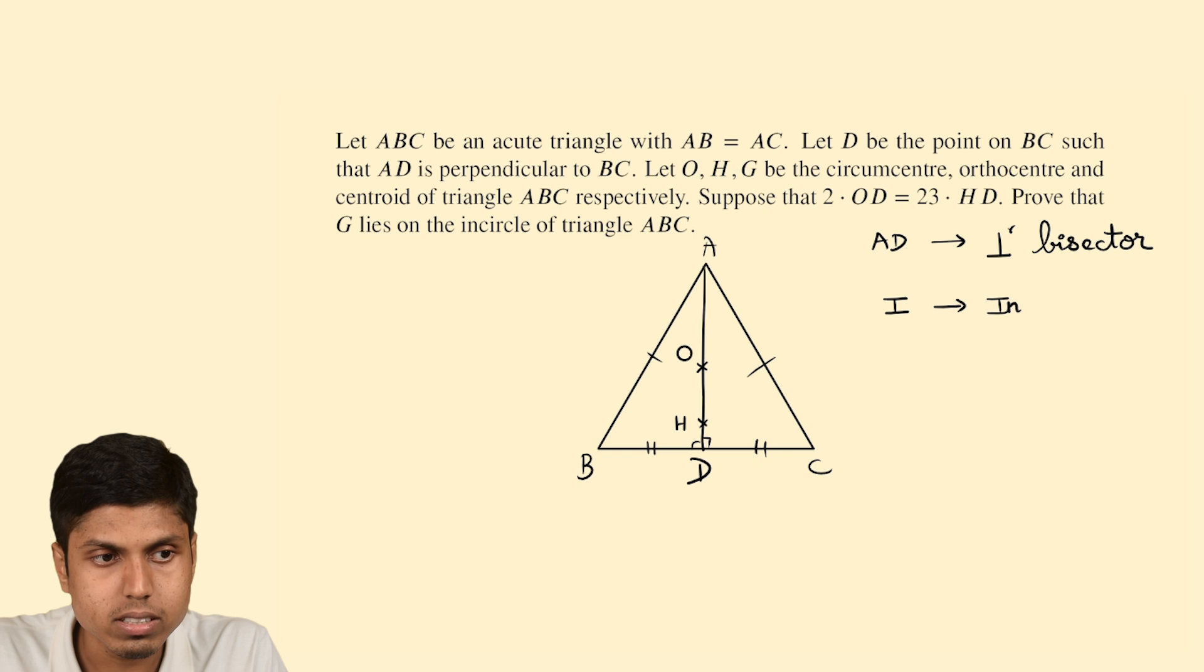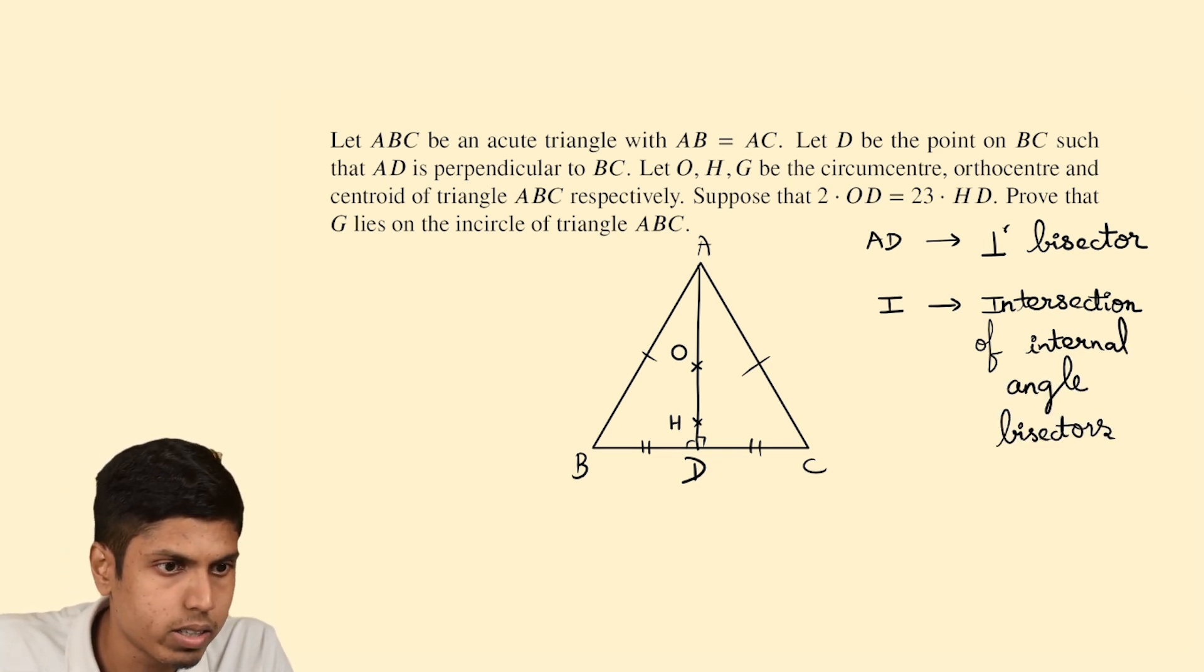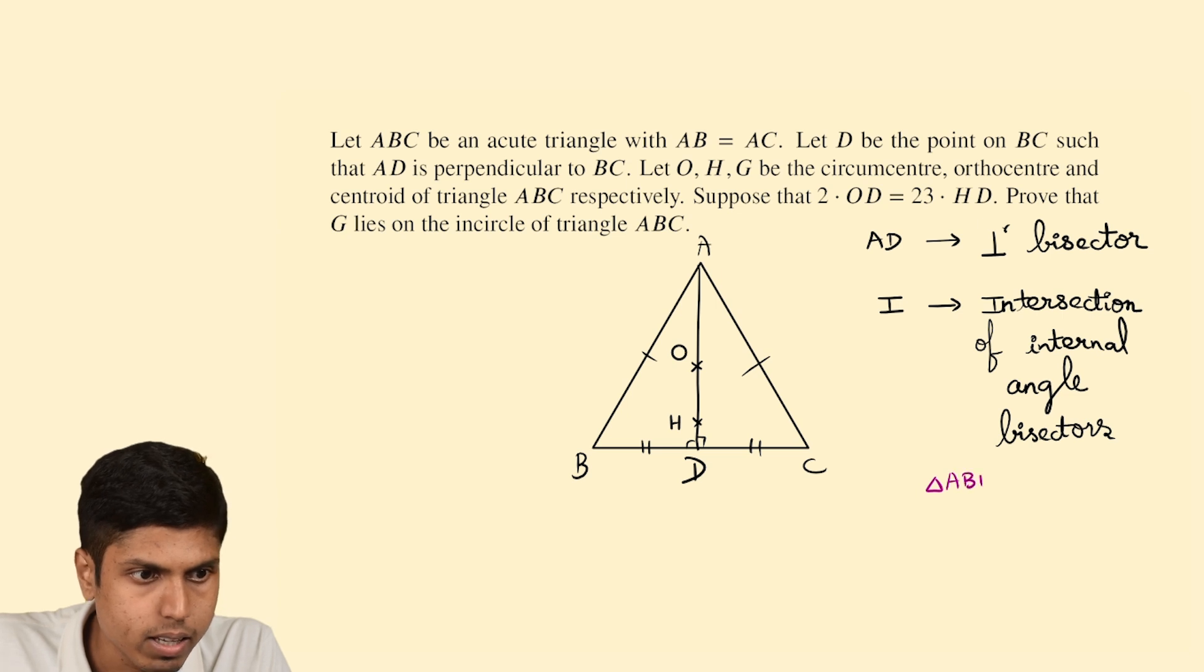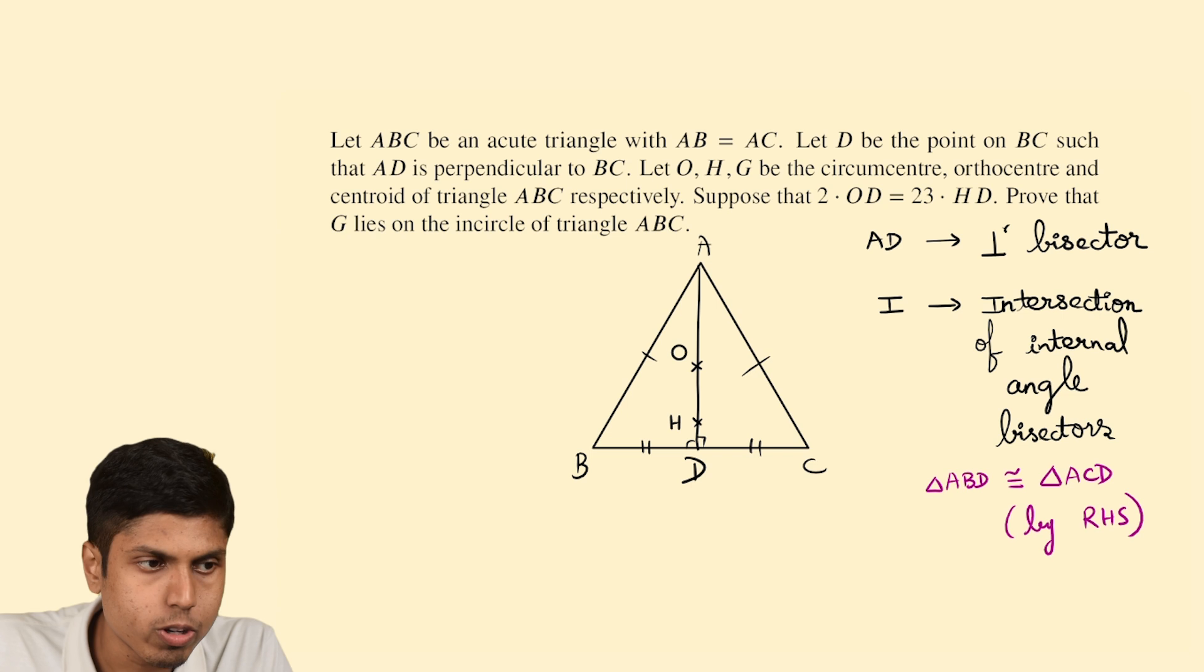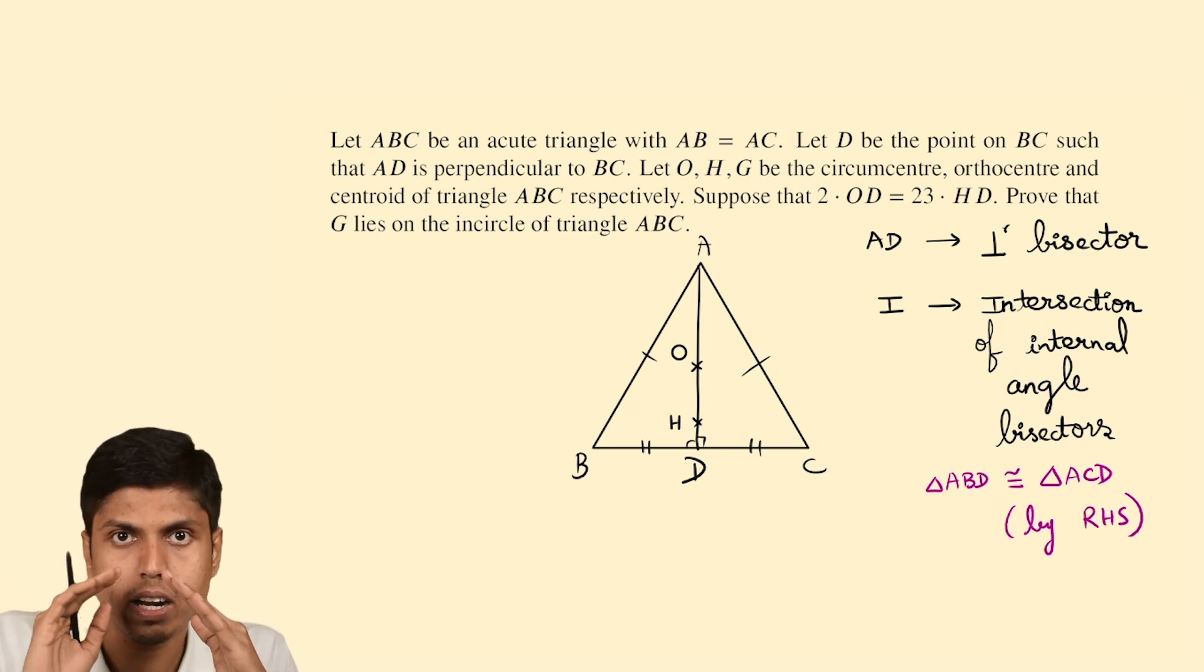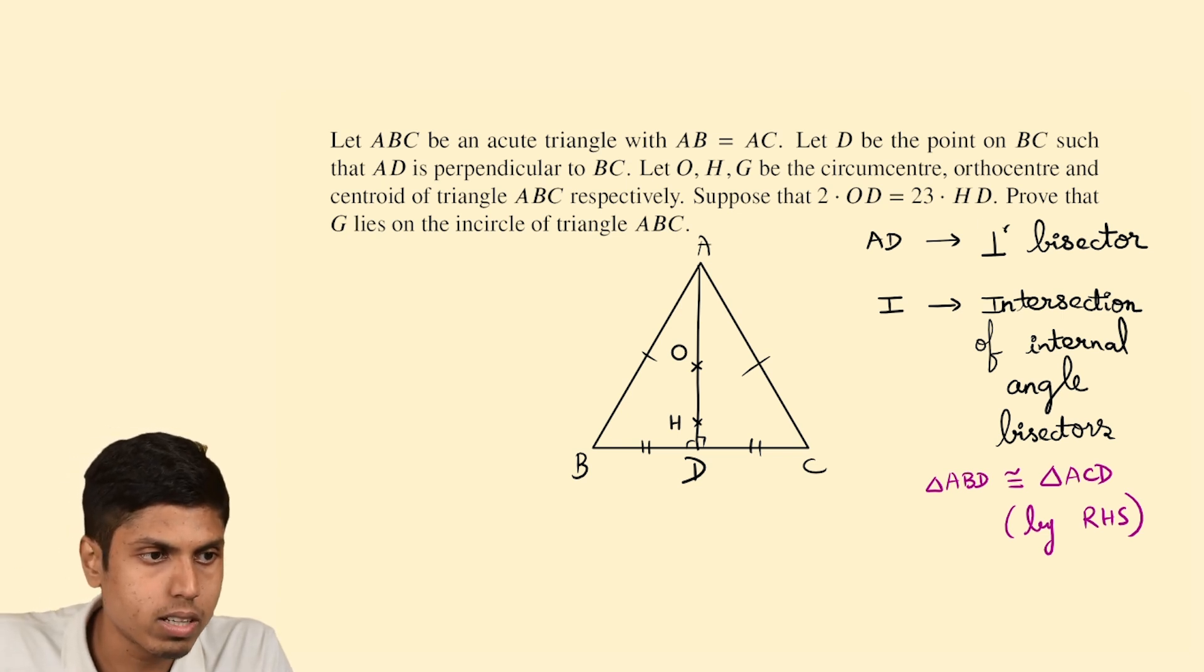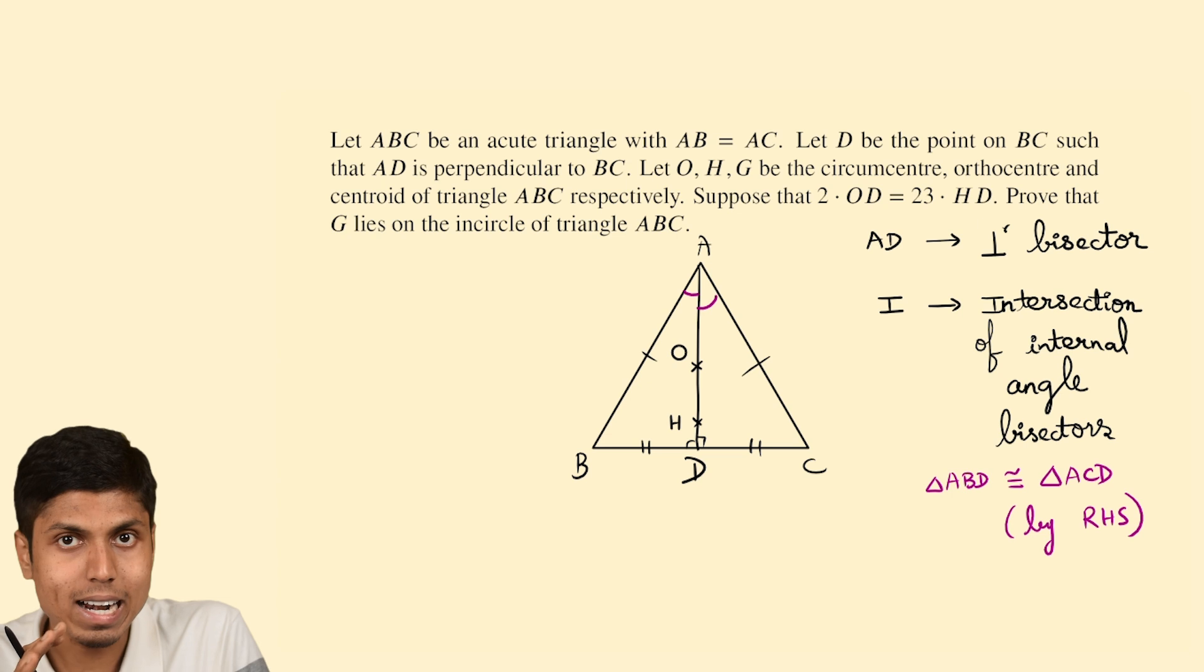And notice that over here triangle ABD is congruent to triangle ACD by RHS. Since the hypotenuse AB equals AC as per the question and angle ADB equal to ADC equals 90 and AD is common. So one leg and the hypotenuse of each triangle and then the right angle are all equal. So thus the triangles are congruent making angle BAD equals angle CAD. So AD shall also act as angle bisector.